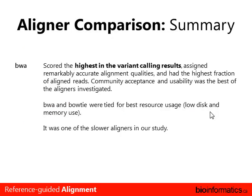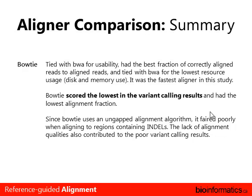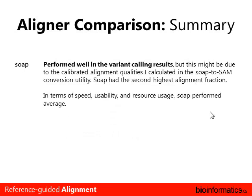To recap the aligner comparison: BWA was the slowest but produced the lowest trio conflict rate. It was also tied with Bowtie for the best resource usage — memory usage and disk I/O — and has probably the best community acceptance. Bowtie was the fastest of the three but wasn't good at trio conflicts, possibly because it's an ungapped aligner. SOAP was kind of in the middle of the pack.